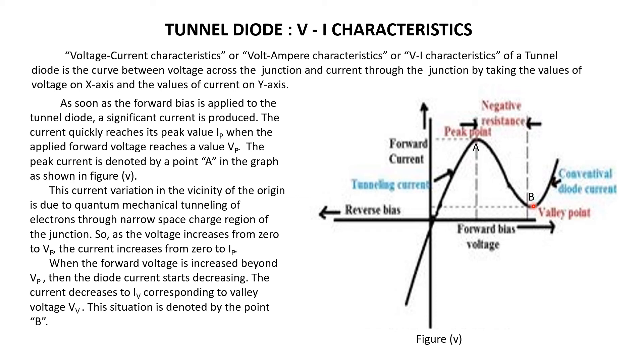The voltage corresponding to this valley point is said to be valley voltage Vv, and the current corresponding to this point is said to be valley current Iv.